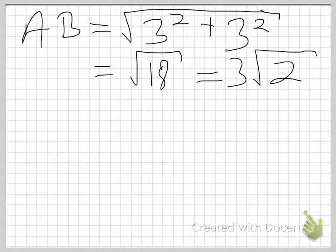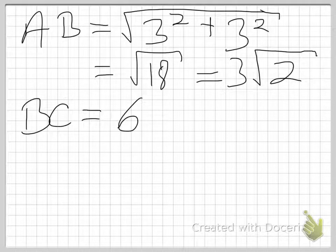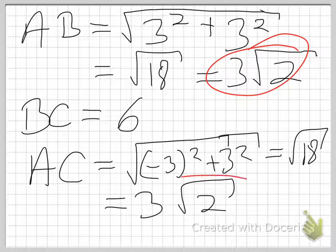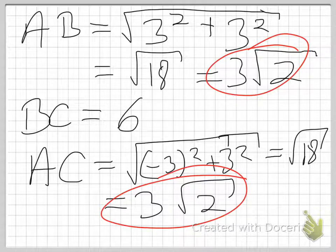Use the distance formula to find the lengths of all three legs of the triangle. AB has a length of 3√2. BC is a horizontal line with a length of 6 — you can use the distance formula or just note that 3 minus (−3) is 6. AC also has a length of 3√2.